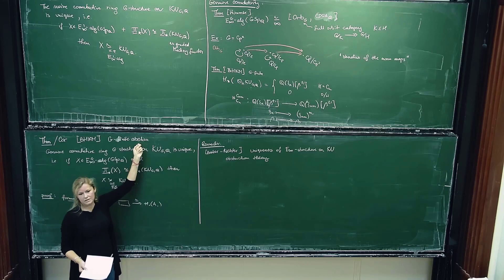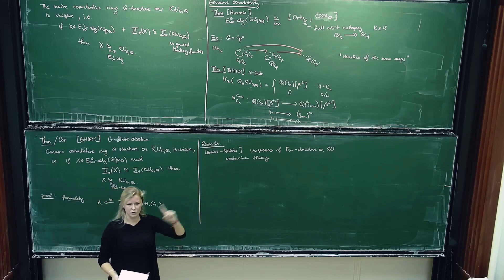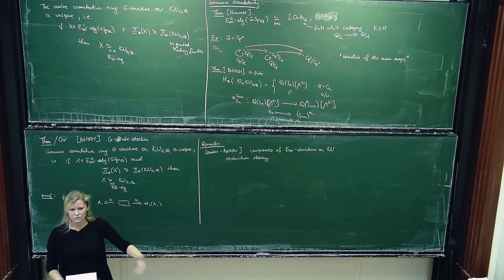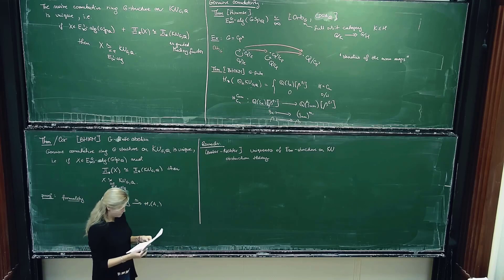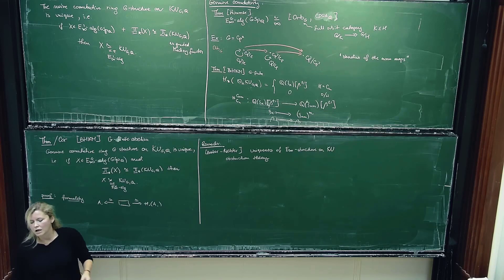Baker and Richter proved uniqueness of E-infinity structure on KU — non-equivariant and before rationalization — using obstruction theory. We do not have equivariant obstruction theory to run with it, so the algebraic model compensates a little bit for that. The abelian assumption was important throughout this talk. It came every time I needed to do formality by brute force: if I have a non-trivial G-action on homology and try to freely resolve it, I'm going to have cycles and cannot run the brute force argument.